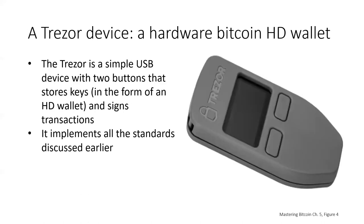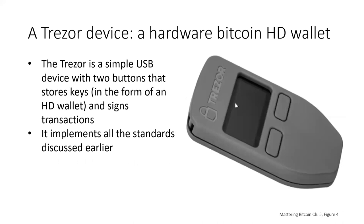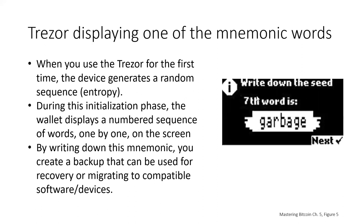Here's an example of what a Trezor hardware device looks like. It's a simple USB device with some buttons that stores keys in the form of an HD wallet, and you can use it to sign transactions for Bitcoin, Ethereum, and so on, implementing the various standards we just talked about. When you use your Trezor, it generates a random number and uses it to create the seed — a list of words. The device's small screen guides you through the list of 12 words to write down.